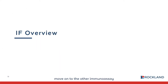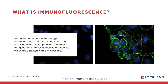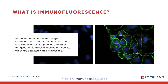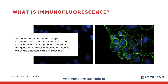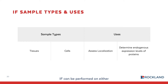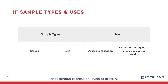Now let's move on to the other immunoassay we're going to discuss today, which is immunofluorescence, or IF. IF is defined as an immunoassay used for the detection and localization of cellular proteins and other antigens by way of fluorescent-labeled antibodies, detected with a fluorescent microscope. IF can be performed on either cells or tissues, and the uses are to assess localization and determine endogenous expression levels of protein — localization being the main application.